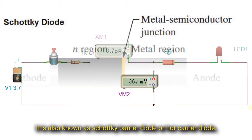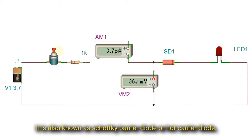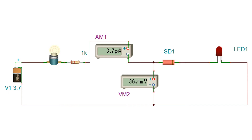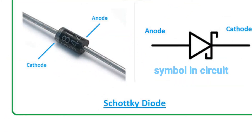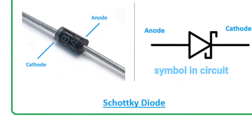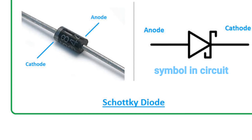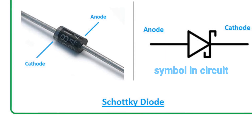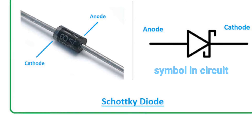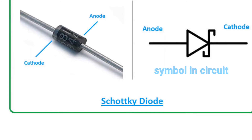Schottky barrier diode, also known as the Schottky barrier diode or hot carrier diode. The symbol for the Schottky barrier diode is based around the basic diode circuit symbol, with a line perpendicular to the triangle curved at both ends.